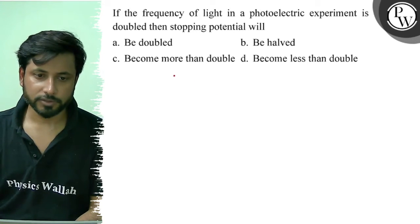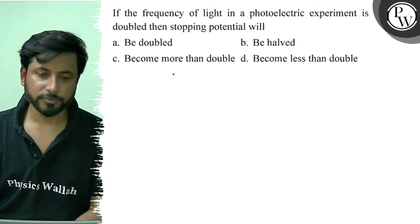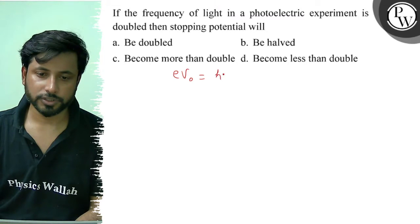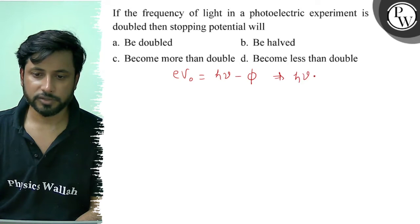So let's look at the first equation. Initially, stopping potential is how much? eV₀ equals h nu minus phi. So here you can take the value of h nu, so h nu will be eV₀ plus phi.